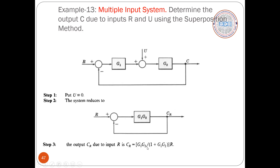This is a unity negative feedback control system. We know how to simplify this loop. The output C(R) — that is the output response for the first input only, with the other input blocked — is G1·G2 divided by (1 + G1·G2), multiplied by input R. So C(R) is the output for input R.